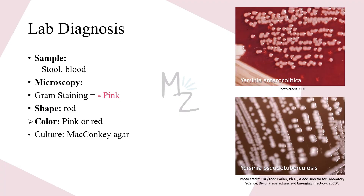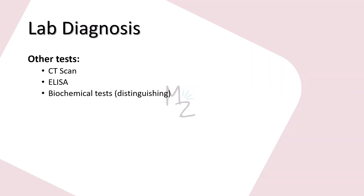Lab diagnosis: samples of stool and blood are needed. Yersinia enterocolitica is usually isolated from stool specimens. On gram staining, both bacteria are gram-negative and appear pink. Culture is performed on MacConkey agar. Yersinia enterocolitica produces circular, small, white colonies, and Yersinia pseudotuberculosis also has white and circular colonies. Other tests include CT scan and ELISA (enzyme-linked immunosorbent assay). The two species can be distinguished from each other by biochemical reactions.